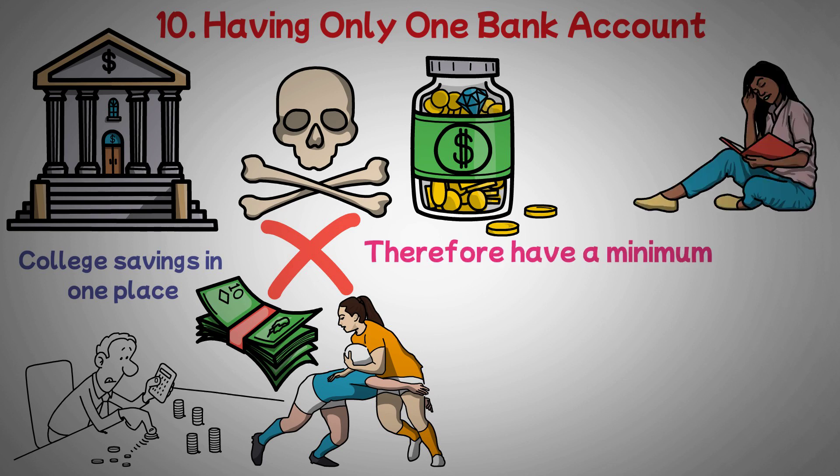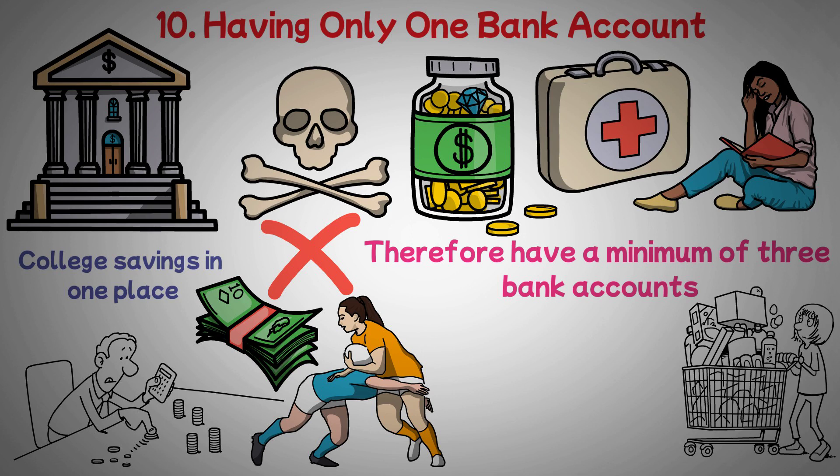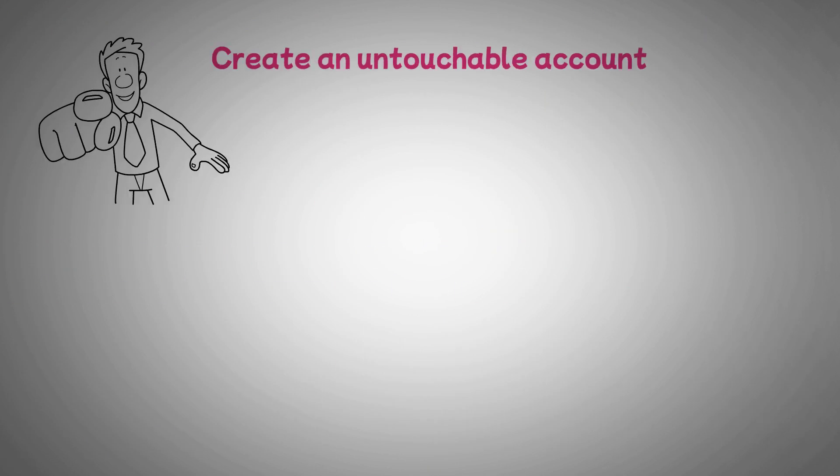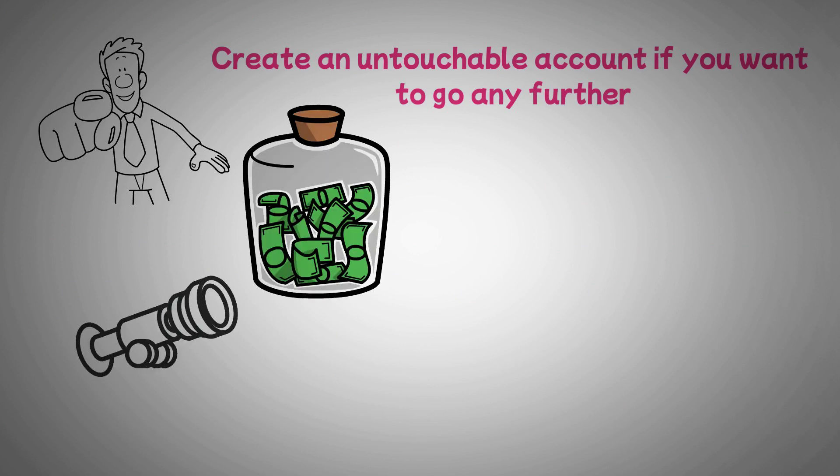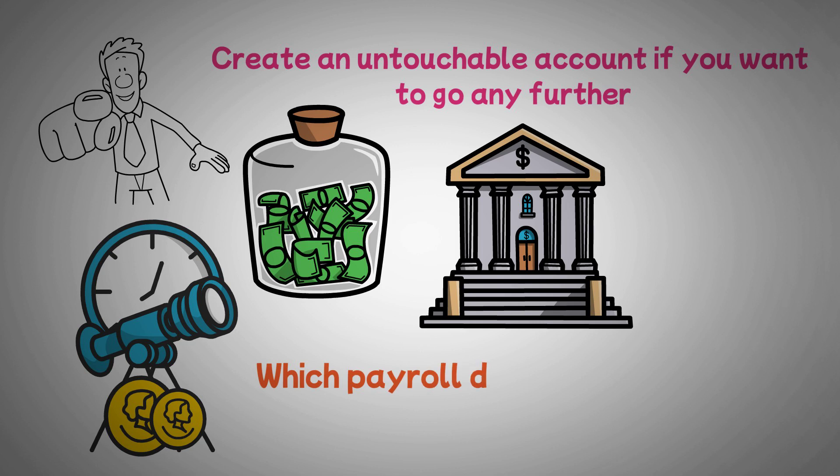You should therefore have a minimum of three bank accounts. One should be set aside for emergencies. Another account, which I'll refer to as a play account, can be used for your daily expenses. Your play account is the sum of money you set aside for leisure or travel. And you ought to create an untouchable account if you want to go any further. You may automate your savings process and make sure your wealth increases over time by using this account as a savings account to which payroll deductions are made each month.